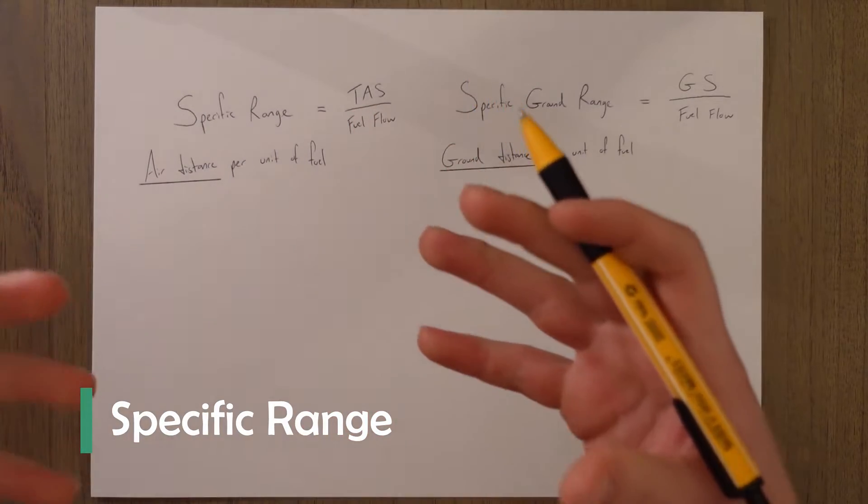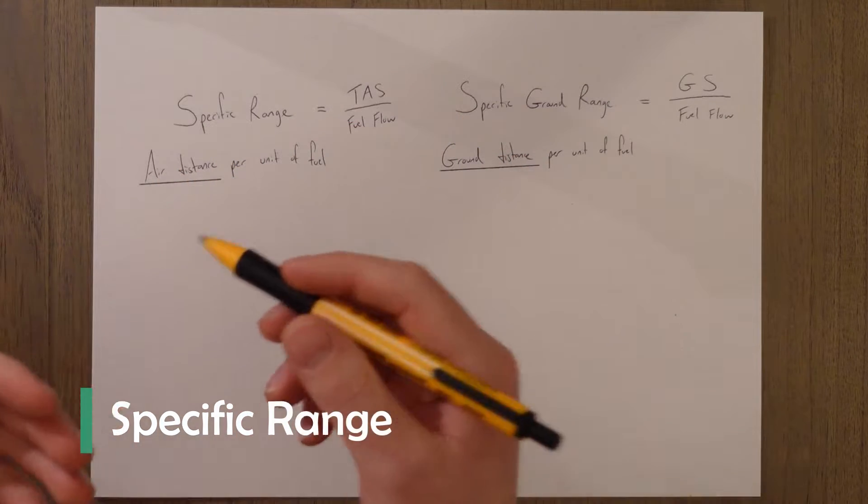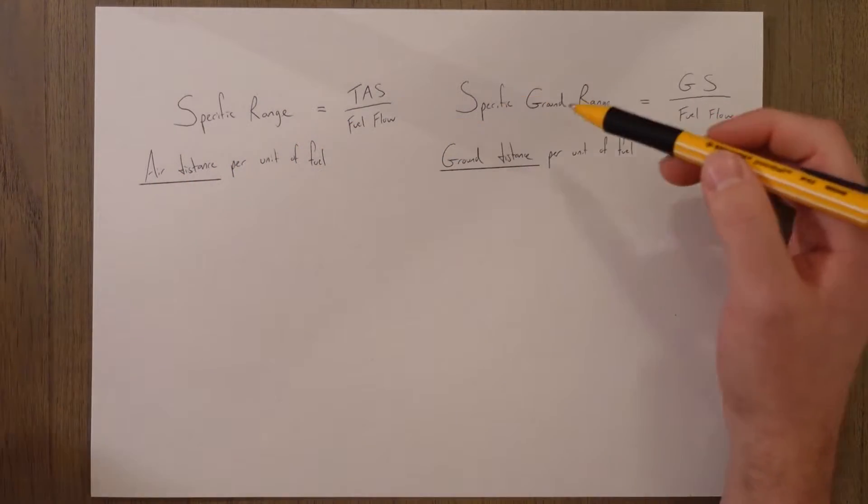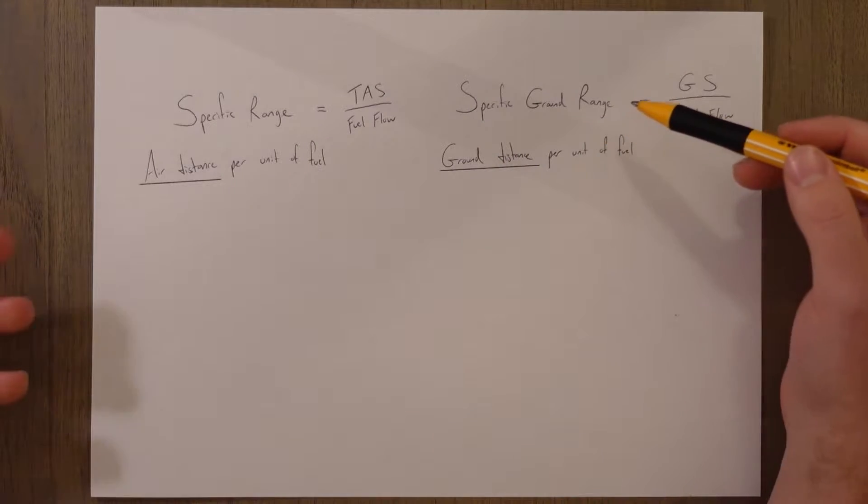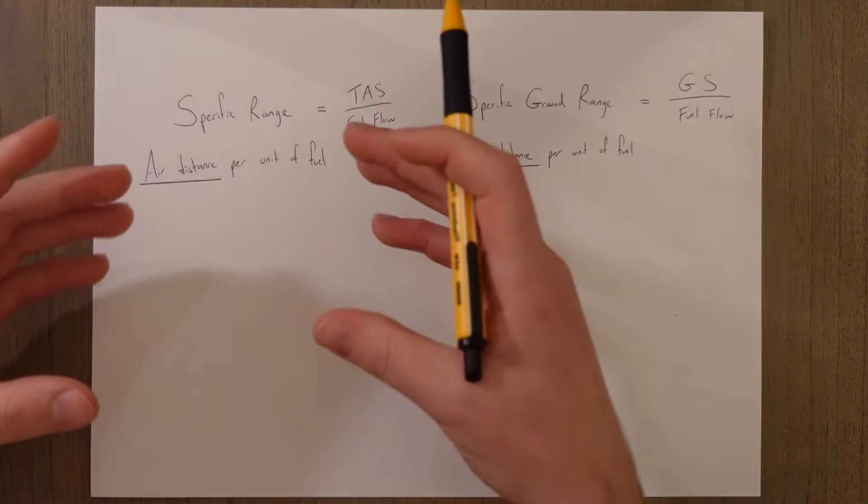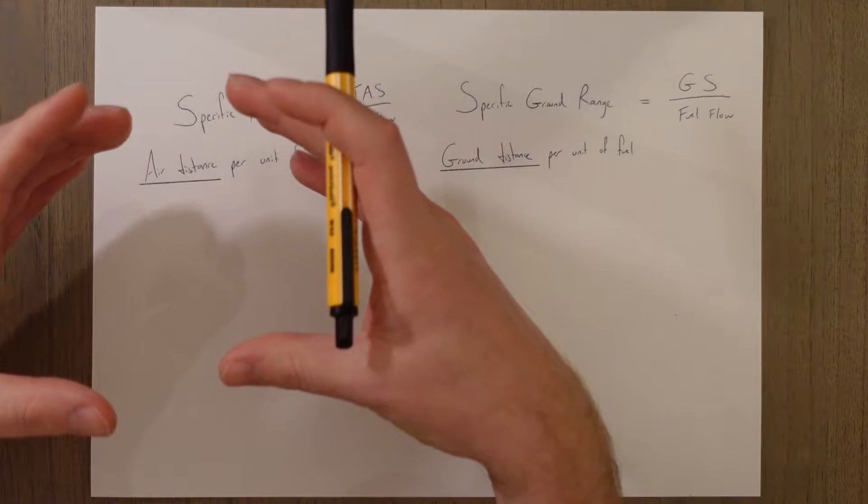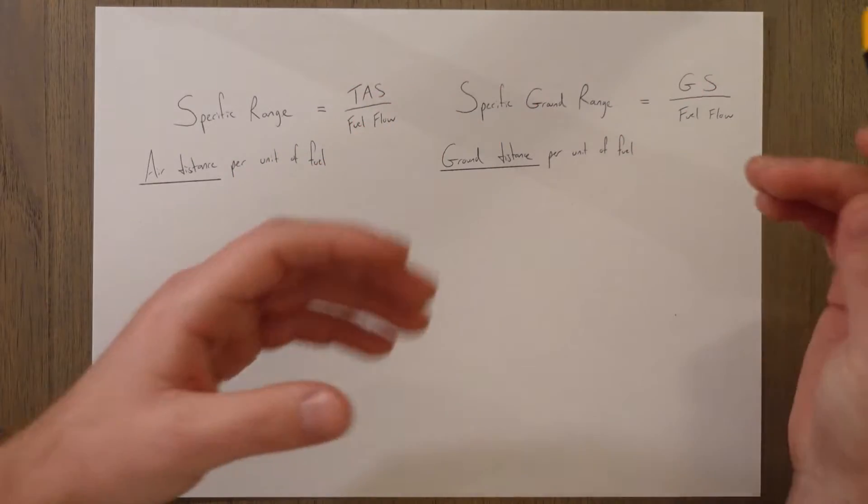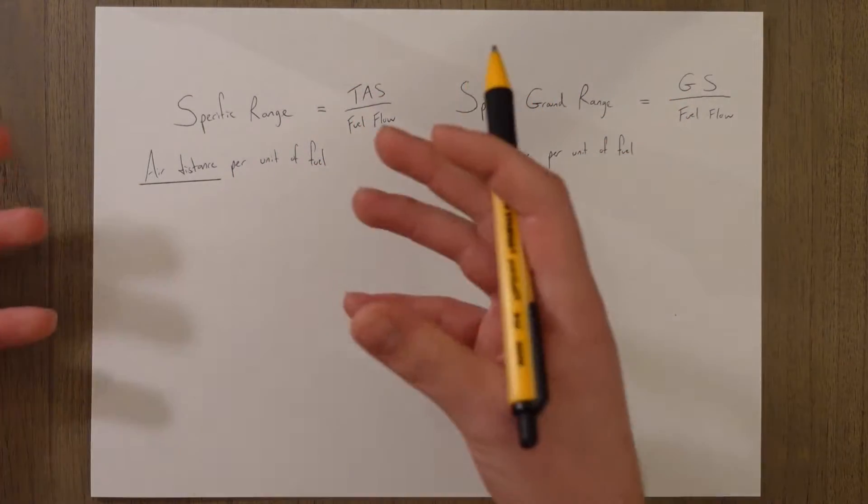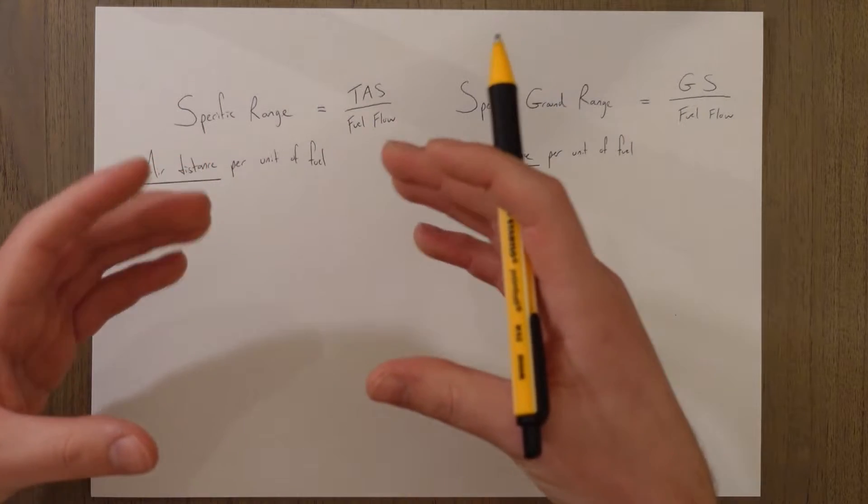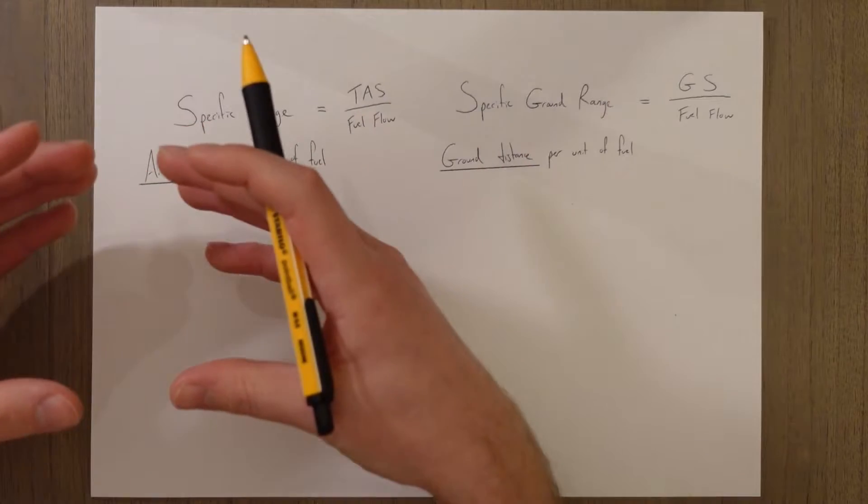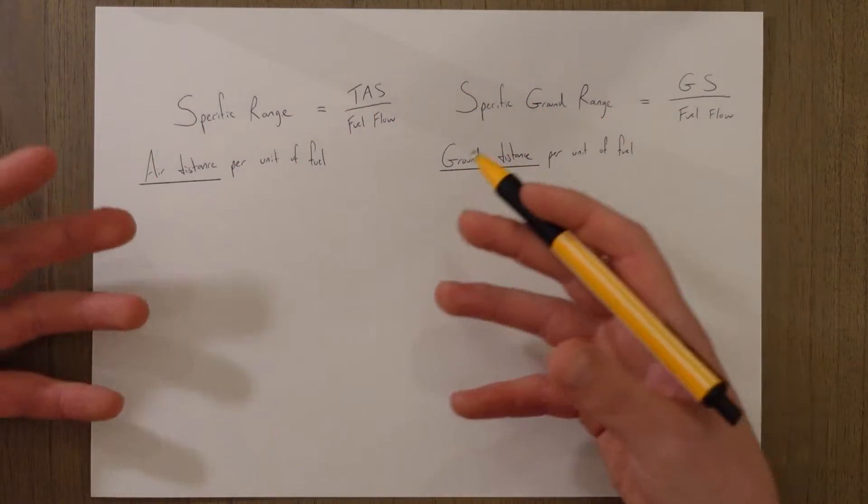Specific range is the distance an aircraft flies through the air per unit of fuel used. If we add in the effects of wind, we get the specific ground range - the distance we actually cover over the ground rather than through the air, because wind will cause the parcel of air that we're flying in to move along the ground as we're flying through it. Think of it like we're flying inside a big train. If the train is stationary, we just fly to the end of the train, but if the train is moving, we'll fly to the end of the train but the whole thing has moved, so our position relative to the ground will be different.